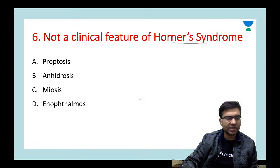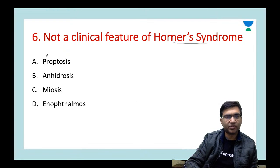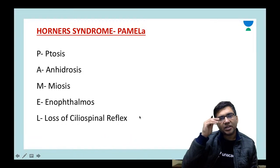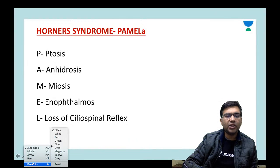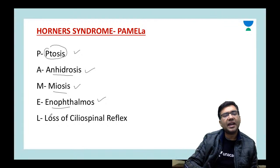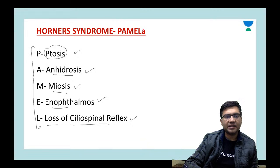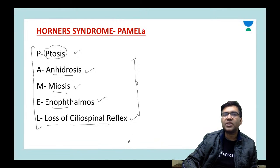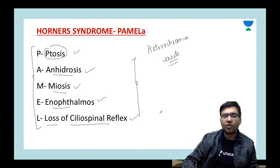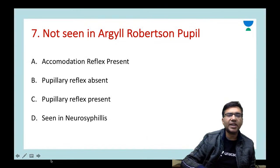Next question: which is NOT a clinical feature of Horner syndrome (sympathetic denervation)? Options are proptosis, anhidrosis, miosis, or enophthalmos. The answer is A — proptosis. In Horner syndrome we get ptosis (drooping of eyelid), not proptosis. Remember the mnemonic PAMELA: P = ptosis, A = anhidrosis, M = miosis, E = enophthalmos (sunken eye), L = loss of ciliospinal reflex. One additional manifestation is heterochromia iridis in congenital Horner syndrome.